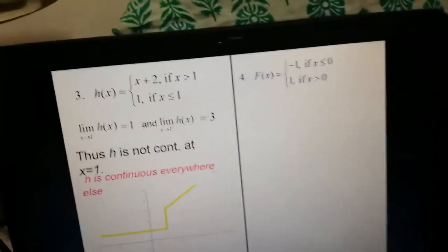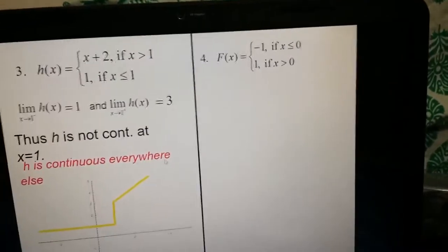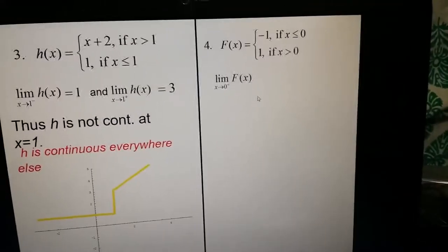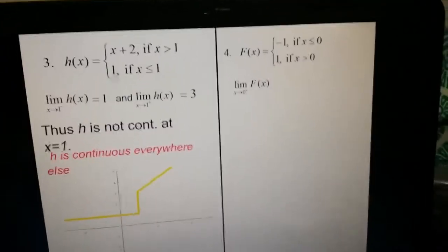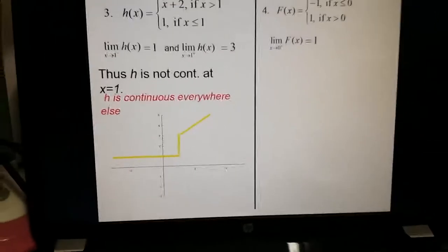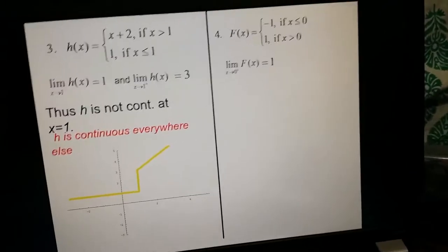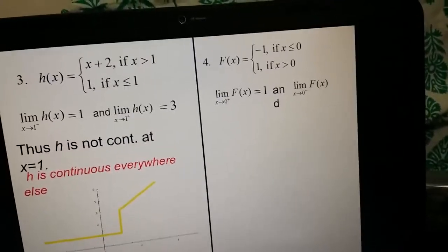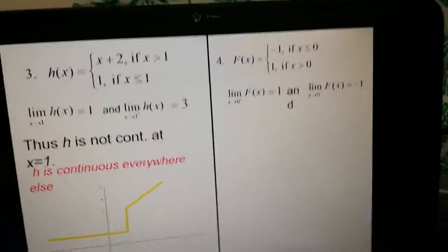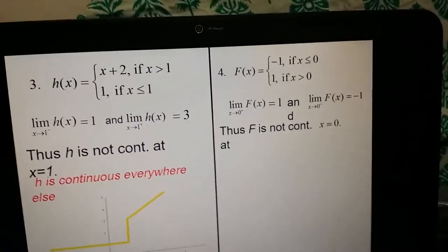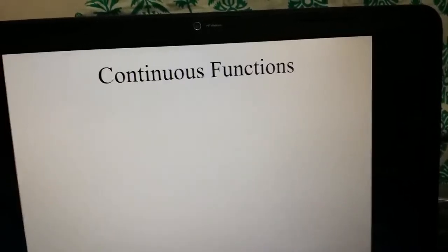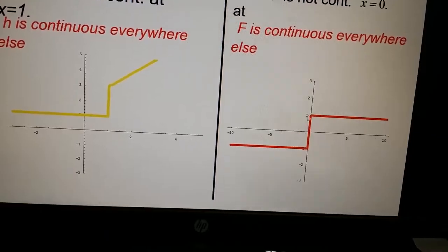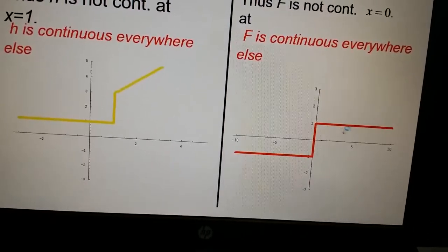Another example: f(x) = -1 if x ≤ 0, and f(x) = +1 if x > 0. The right-hand limit at 0⁺ gives f(x) = 1, and the left-hand limit at 0⁻ gives f(x) = -1. They are not equal, so f is not continuous at x = 0. From the graph, you can see that at x = 0 the function is discontinuous; the rest of the function is continuous everywhere.